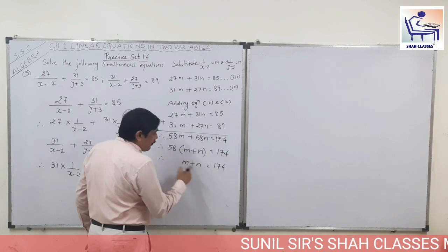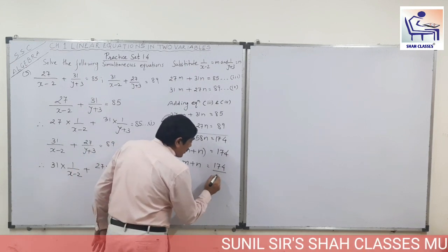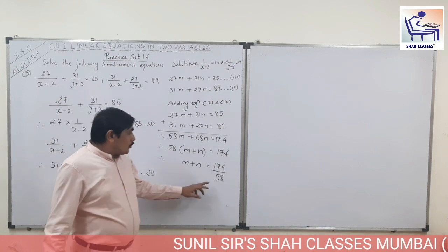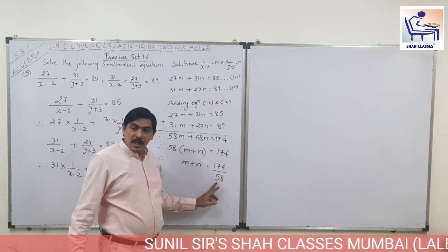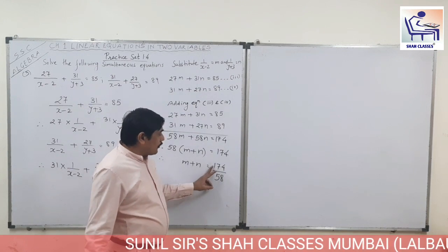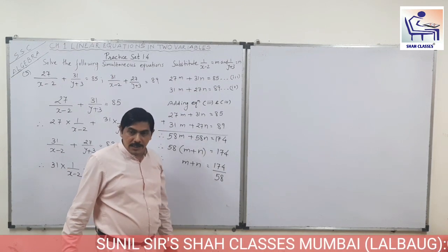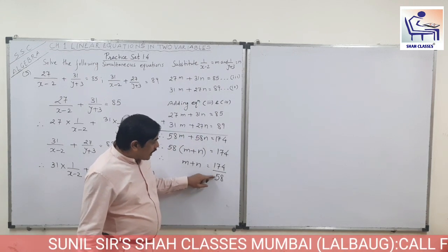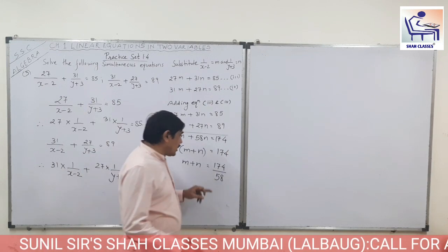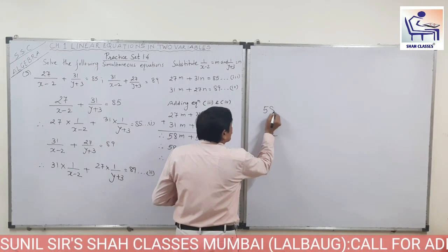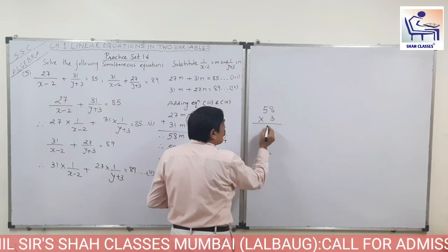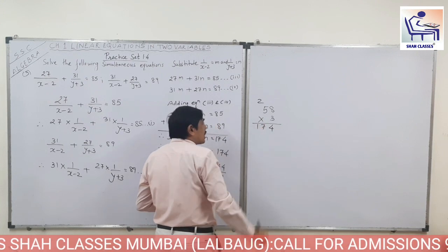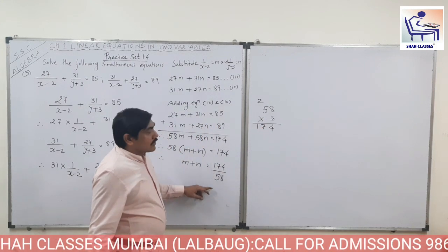So the value of M plus N is 174 divided by 58. You can notice 58 is nearby 60 and 174 is nearby 180. Since 6 threes are 18, that means 60 threes are 180, so 58 threes are 174. Let's check: 58 times 3 — 3 eights are 24, 3 fives are 15 plus 2 is 17 — yes, 174. So we verify.